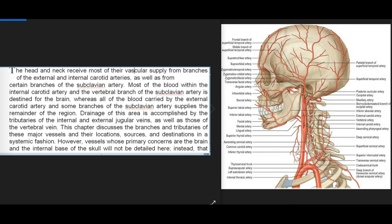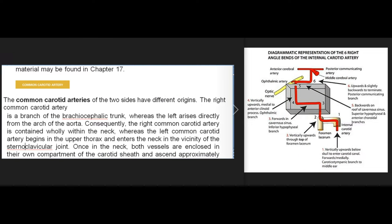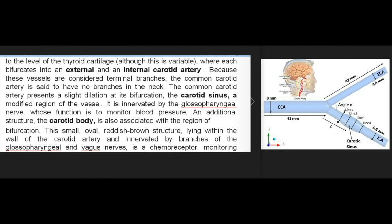The common carotid arteries of the two sides have different origins. The right common carotid artery is a branch of the brachiocephalic trunk, whereas the left arises directly from the arch of the aorta. Consequently, the right is contained wholly within the neck, whereas the left begins in the upper thorax. Once in the neck, both vessels are enclosed in the carotid sheath and ascend to approximately the level of the thyroid cartilage, where each bifurcates into external and internal carotid arteries. The common carotid artery is said to have no branches in the neck.